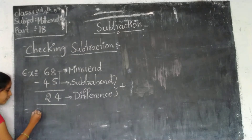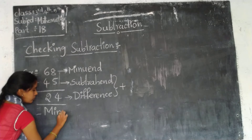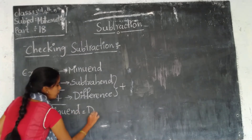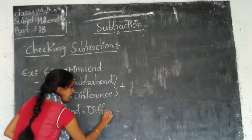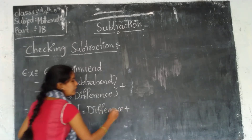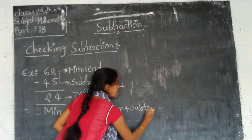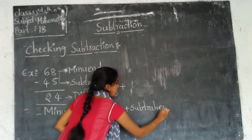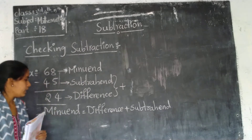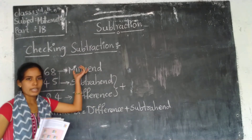Let's see how we can write this: minuend equals difference plus subtrahend. To check whether our answer is correct, we add the difference and the subtrahend and we should get the minuend.